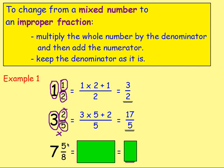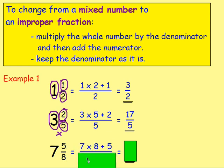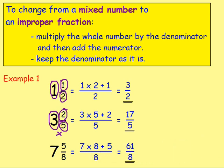And the last one: seven and five eighths. Take the whole number and multiply by the denominator — seven times eight — then add the numerator, five, and keep the denominator as eight. Seven times eight is fifty-six, add five gives sixty-one — so the answer is sixty-one over eight. That's how you change from a mixed number to an improper fraction.